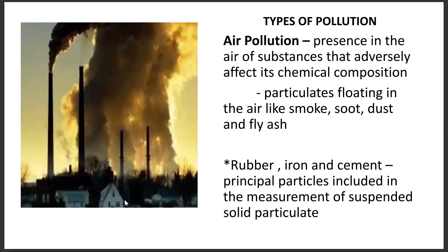For this video, I'll be introducing you to the types of pollution, and the first one would be air pollution. Air pollution is the presence in the air of substances that adversely affect its chemical composition. Particulates floating in the air — like smoke, soot, dust, and fly ash — can be seen in this particular picture. Rubber, iron, and cement are just examples of the principal particles included in the measurement of suspended solid particulates.